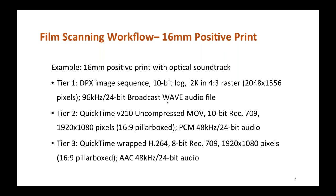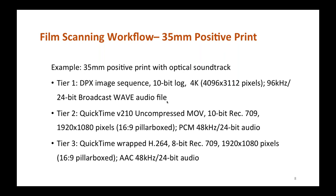For an access tier, one could make a QuickTime-wrapped H.264 file in a color space designed for high-definition display environments, at 1920x1080 resolution with AAC-encoded audio at 24-bit 48 kHz. The H.264 and AAC audio streams would be wrapped within the QuickTime container, making a single file. Another example is the 35mm positive print, where the specifications are more or less the same with the key difference being a resolution of 4K within the DPX image sequence.